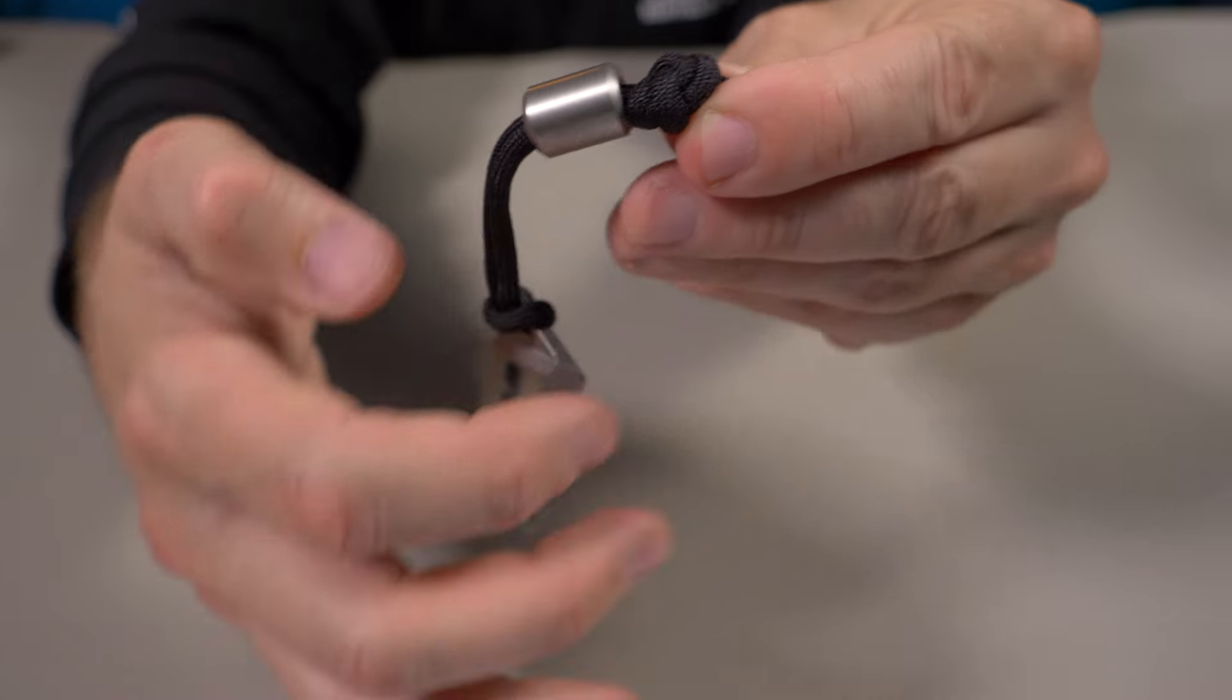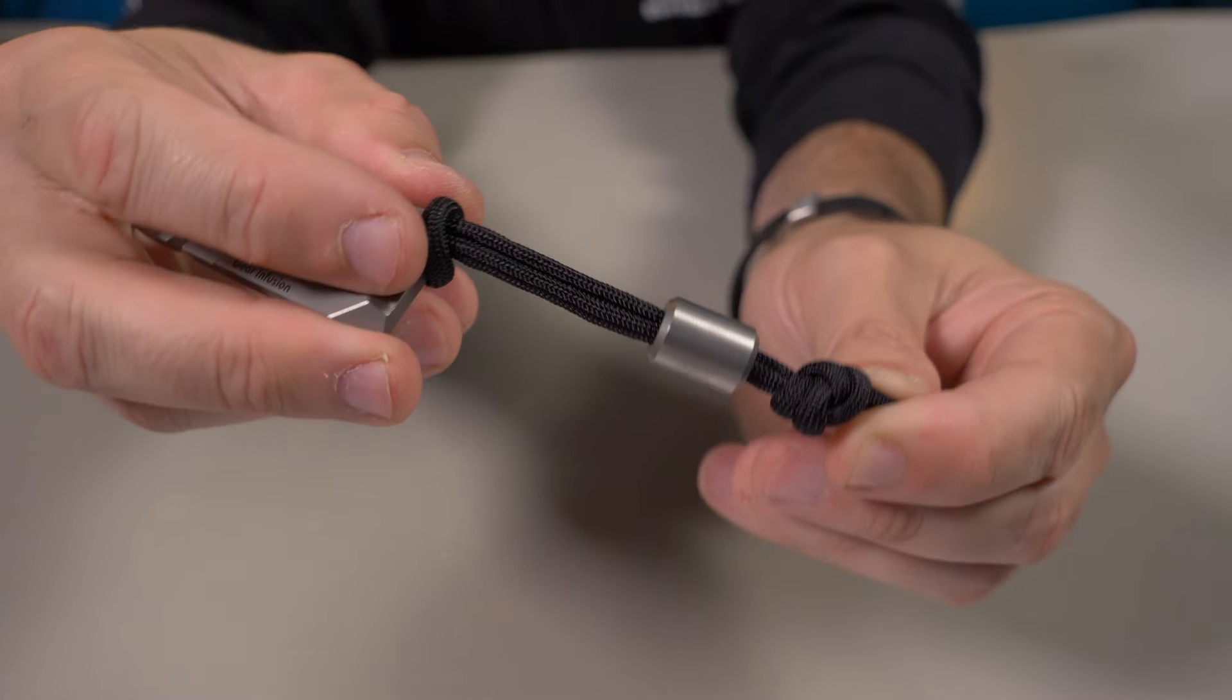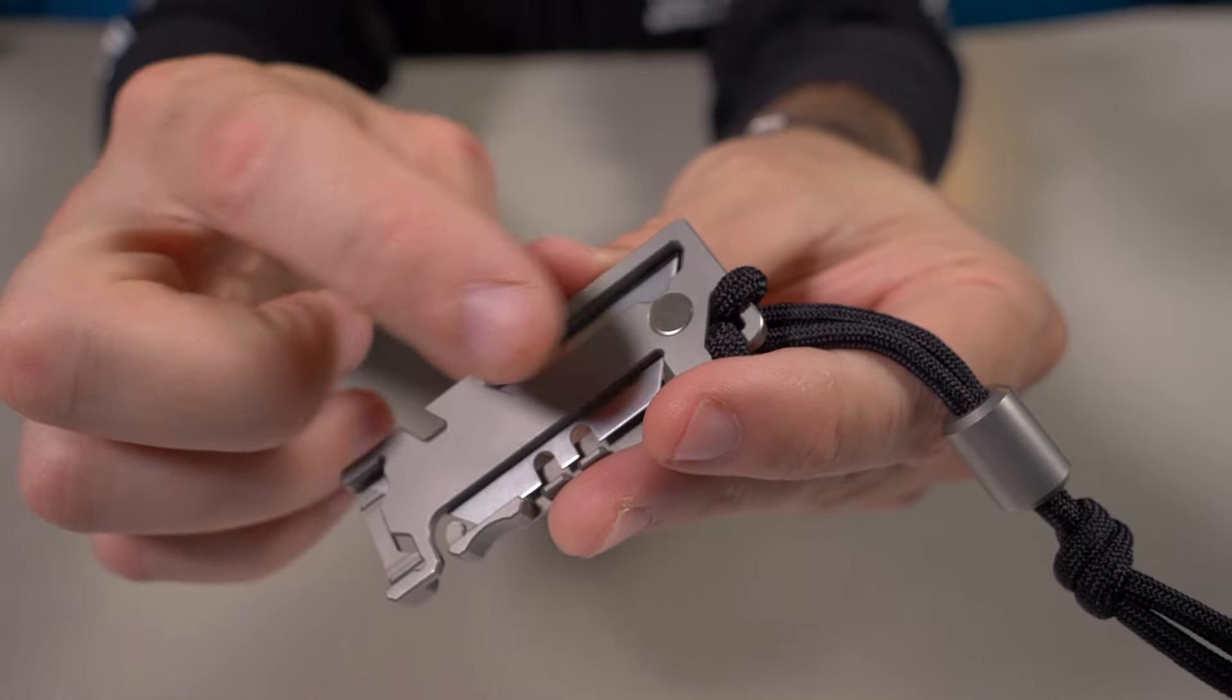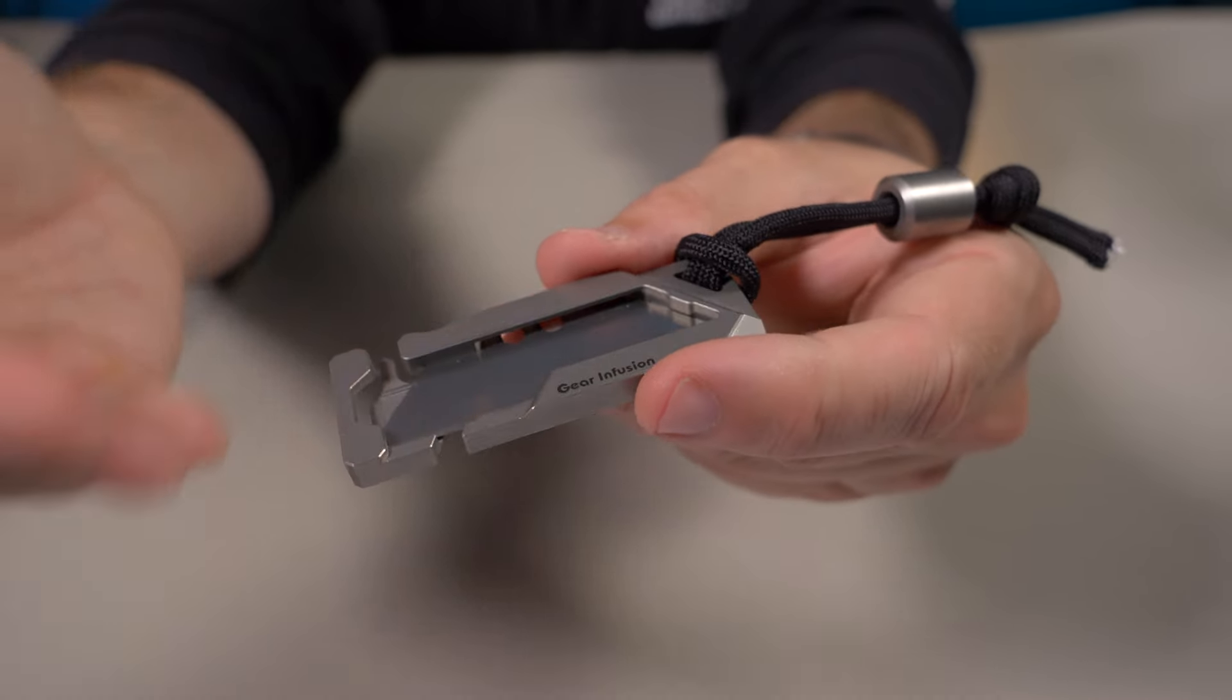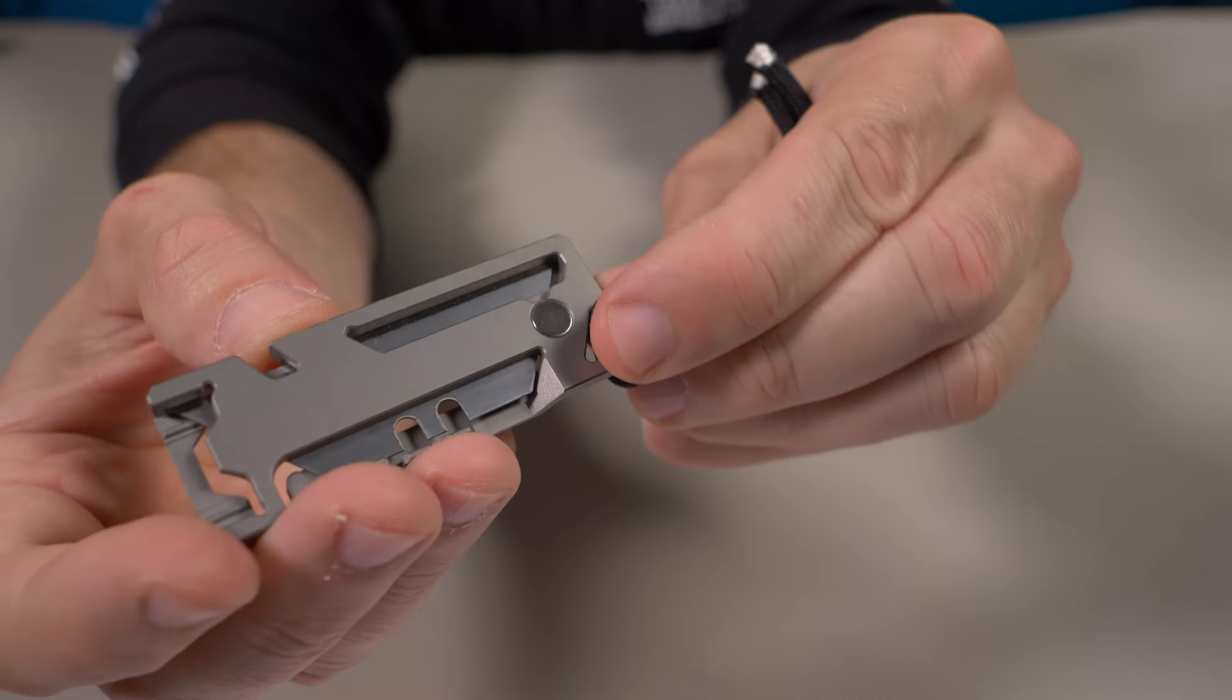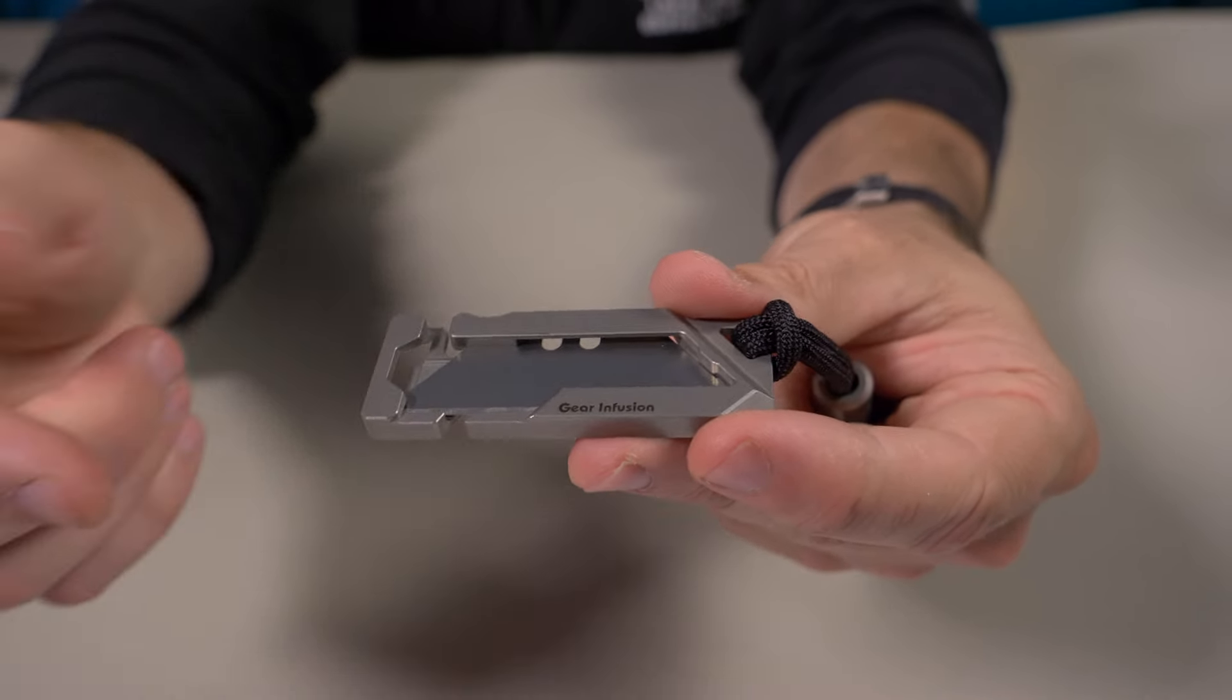It also has an attachment point for a lanyard. You can see there's a paracord lanyard on here with a grade 5 titanium bead. Gear Infusion sent this to me as is, but if you want this paracord and grade 5 titanium bead when you order, it's a ten dollar upcharge. The magnet not only helps keep this razor blade from accidentally deploying in your pocket, but you can also mount this to a toolbox, anything magnetic. The problem is if you do go with this paracord lanyard right here, it does affect its mounting capabilities. It's also TSA friendly, so if you're flying just remove the blade and you should be fine.